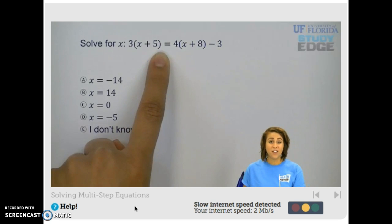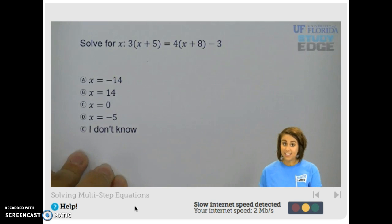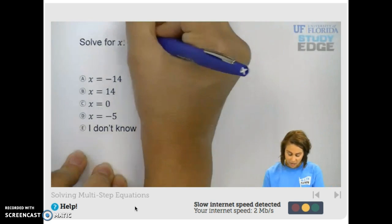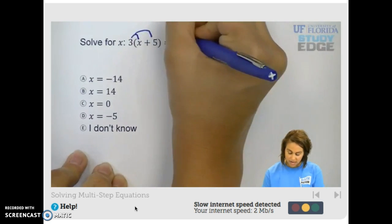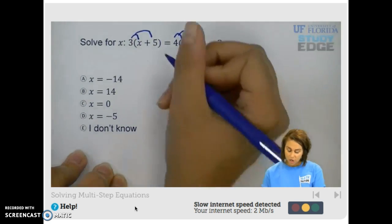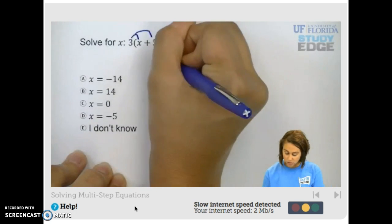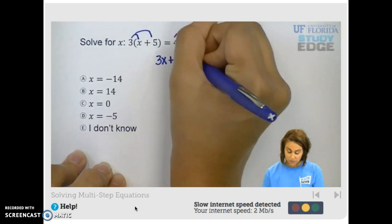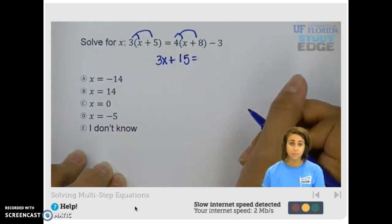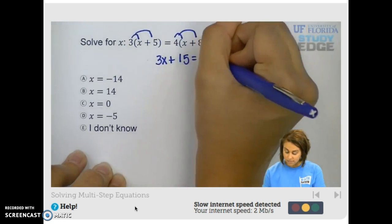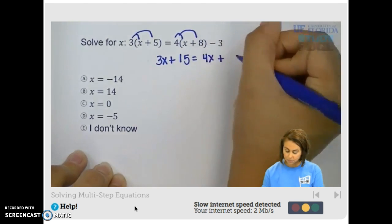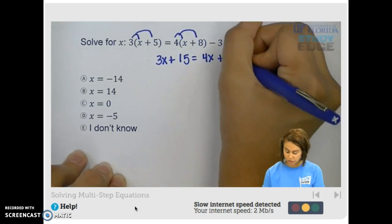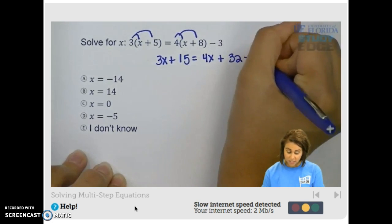What do you think we're going to do first? If you said distribute, you're exactly right. We're going to distribute our 3 and our 4 into our binomial. We have 3 times x, which is 3x, plus 3 times 5, which is 15, equals 4 times x, which is 4x, plus 4 times 8, which is 32, minus 3.